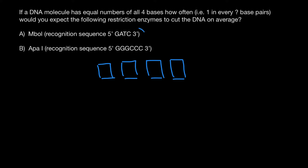This sequence is what we call palindromic — in other words, it reads the same in one direction and in the other direction. So let me write down the sequence to make it more clear: five-prime G-A-T-C three-prime on the top strand, and the bottom strand also reads five-prime G-A-T-C three-prime. We read the same sequence in both directions.